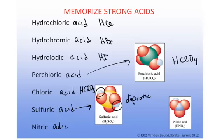The last acid you need to memorize is nitric acid. It is an oxy acid — nitrogen with three oxygens and one hydrogen bound — and it is a strong acid as well. Note that nitrous acid and chlorous acid, which are similar in form to chloric acid and nitric acid, are not strong acids. So not all oxy acids are strong; you just need to memorize this short list.